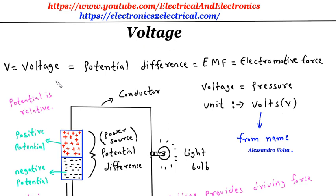Voltage is the potential difference, also known as EMF, which stands for electromotive force. Voltage is the pressure which pushes the electrons.